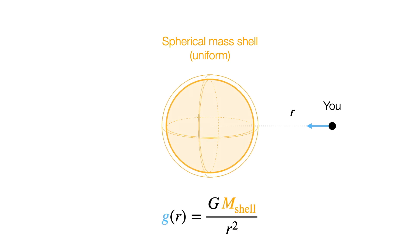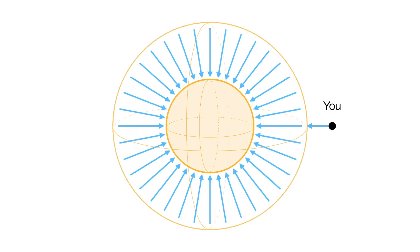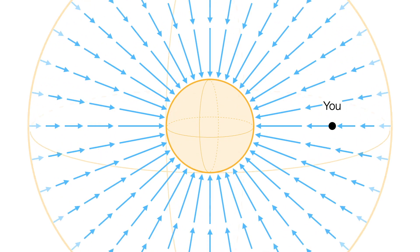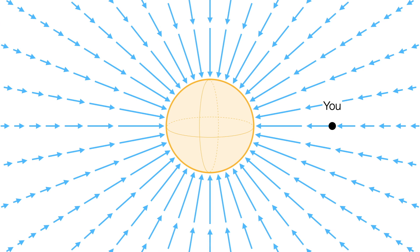Because of how area increases with distance squared while gravity, on the other hand, weakens with distance squared, a special cancellation happens that makes the gravitational field in this case and in this case identical.